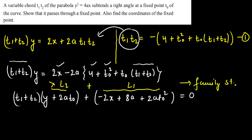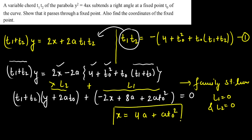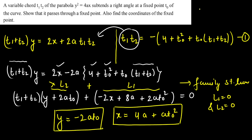Setting L1 = 0: 2x − 8a − 2a·t0² = 0, so x = 4a + a·t0². Setting L2 = 0: y = −2a·t0. Comparing with the vertex result of 4a, the x-coordinate here is 4a + a·t0². Therefore, the fixed point is (4a + at0², −2at0). Hence proved — the chord always passes through this fixed point, and we have calculated its coordinates as well.